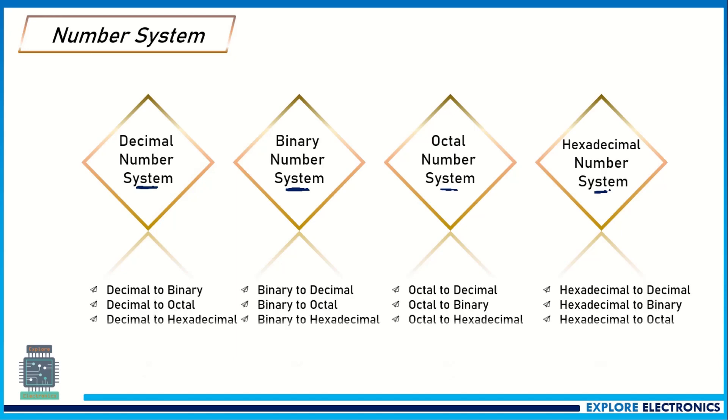In computer languages, we use hexadecimal and octal number systems to represent binary numbers in a convenient manner, so both are important. We need to understand the conversion from decimal to binary, decimal to octal, decimal to hexadecimal, and other number systems.